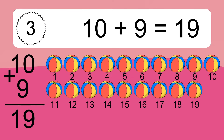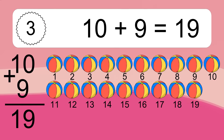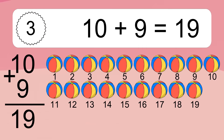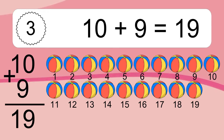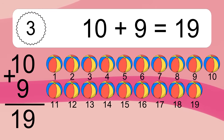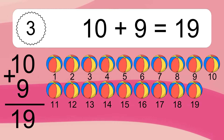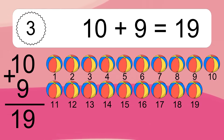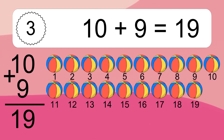Let's count it. 1, 2, 3, 4, 5, 6, 7, 8, 9, 10, 11, 12, 13, 14, 15, 16, 17, 18, 19.